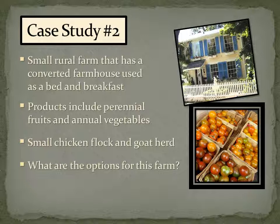Case Study Number Two: this is a small farm that currently has a bed and breakfast. They're growing some perennial fruits and annual vegetables, and they have a small chicken flock and goat herd. Take a couple minutes, pause the slideshow, and jot down a couple of options this farm has for marketing. When you're ready, continue for some solutions.